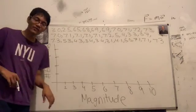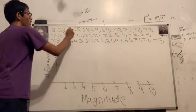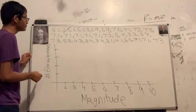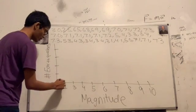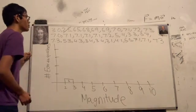Alright folks, so now we actually need to count out how many earthquakes fall in each category. So let's go ahead and do that. Let's see how many earthquakes fall between the two and three range. So that's going to be one earthquake. And wow, that looks like that's pretty much it. One earthquake between two and three.